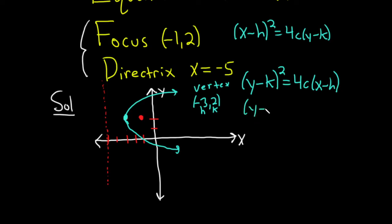So it'll be y minus 2 quantity squared, just like that, equals 4c times x plus 3. It's a plus 3 because there's already a minus there from the negative 3, and negative and negative is positive.